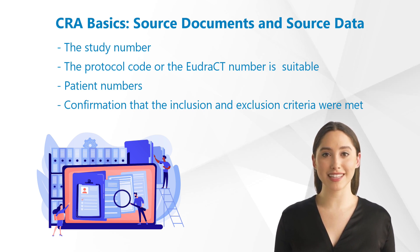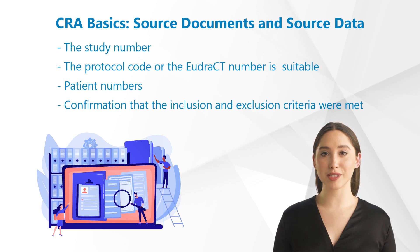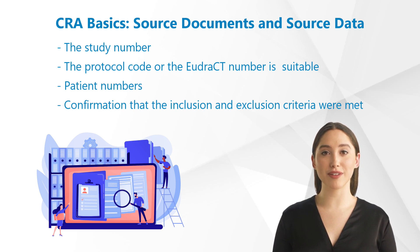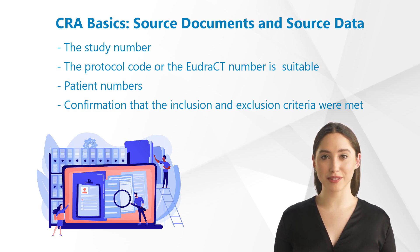This is not sufficient. The protocol code or the EudraCT number is suitable. Patient numbers, for example both the screening number and the randomization number, should be available if there are different numbers.